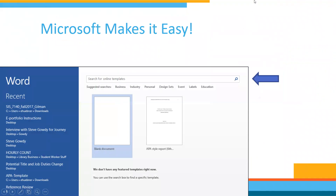For structuring your APA paper, Microsoft makes it easy — they have a template you can download that shows you basically how to write an APA style report. There's also one included in the orientation materials that was simplified by our online education staff to show what an APA paper would look like for our courses. To get this in Microsoft Word, you just search for an online template, search APA, and it'll pop right up.